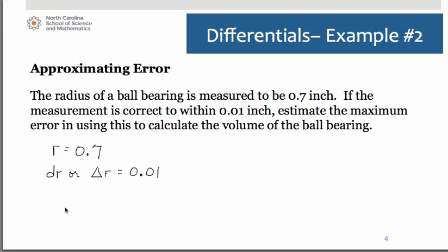What we're asked to do is calculate the error in the volume. We can refer to that as dv or we could refer to it as delta v. And that's what we're trying to determine. We need to know how to calculate volume of a sphere. That formula is 4 thirds pi r cubed.